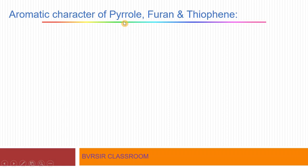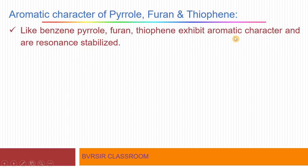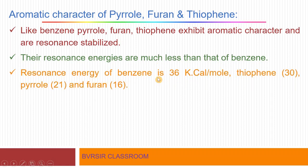Next, we will take up the aromatic character of pyrrole, furan, and thiophene. These three also exhibit aromatic behavior, just like benzene. To understand this aromatic behavior, including the aromatic sextet and Hückel's rule, it would be helpful to review the benzene video I made earlier — that video explains aromatic character, what aromatic means, and what non-aromatic means very clearly.